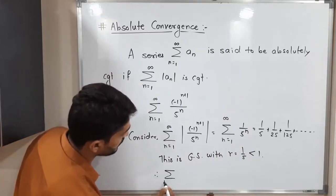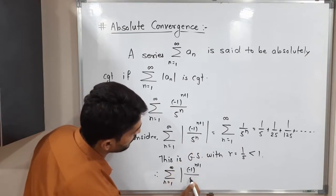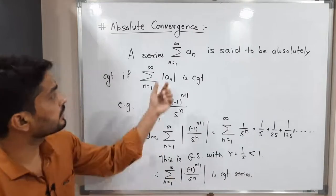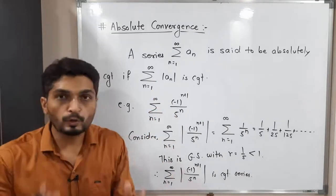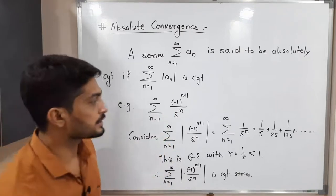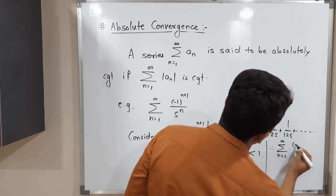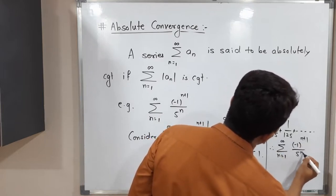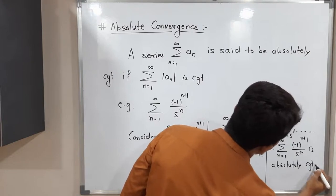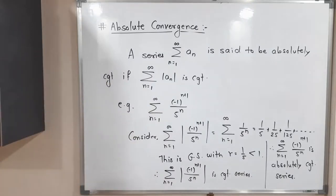Therefore, the summation from n=1 to infinity of (-1)^(n+1) / 5^n is a convergent series. That means: we took our given series, applied modulus to each term, and the resulting series is convergent. Therefore, we can say the original series is absolutely convergent. Conclusion: the series summation from n=1 to infinity of (-1)^(n+1) / 5^n is absolutely convergent.